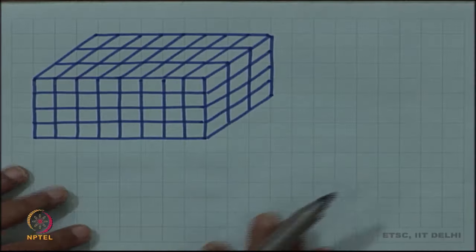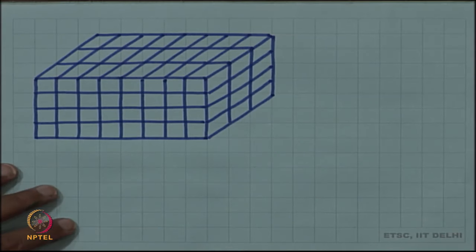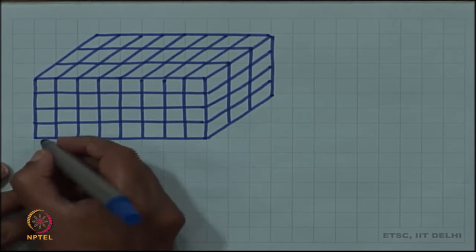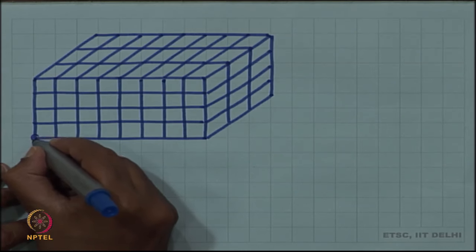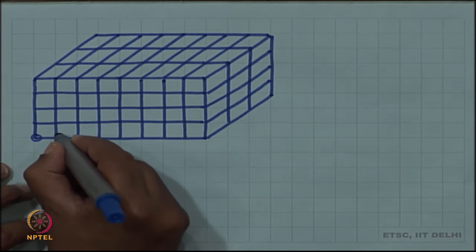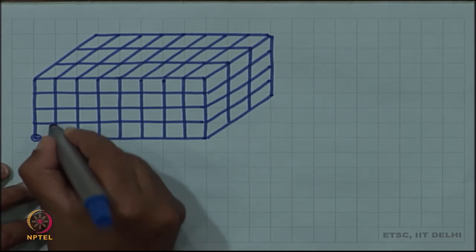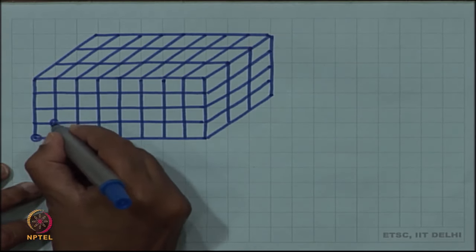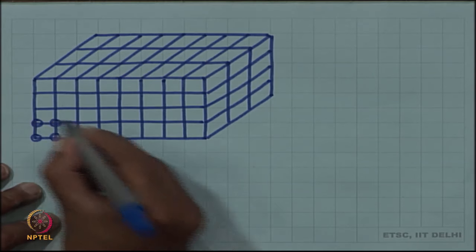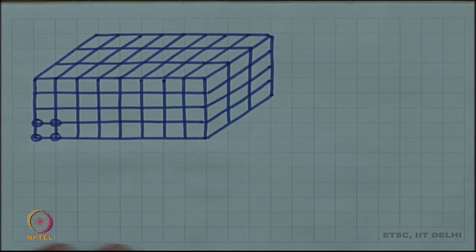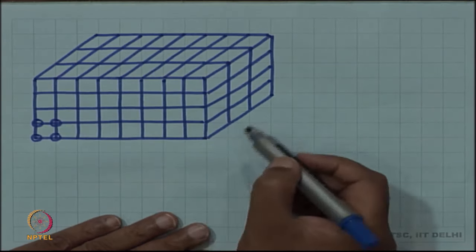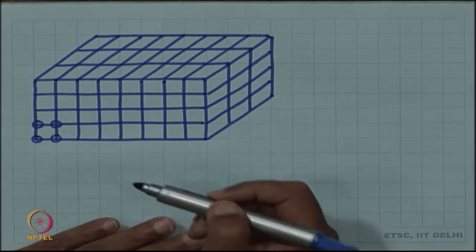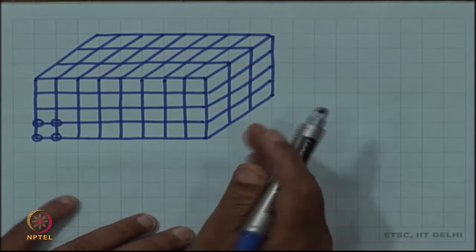This is a perfect simple cubic crystal. You should assume atoms sitting at each of the intersection points — I am not going to draw all of them. These are simple cubic unit cells with corners as atoms.